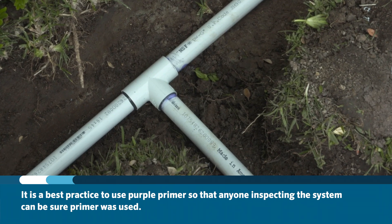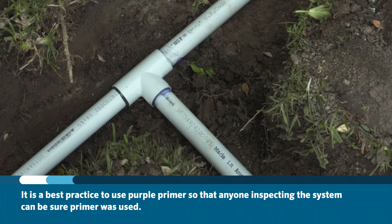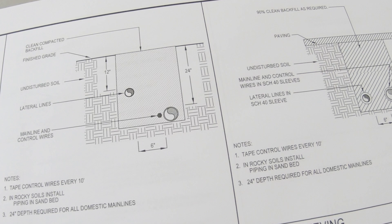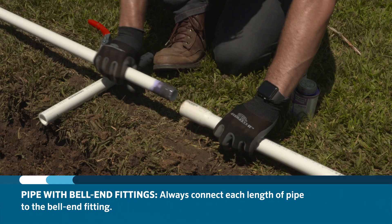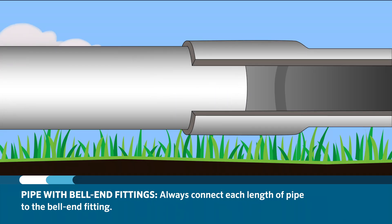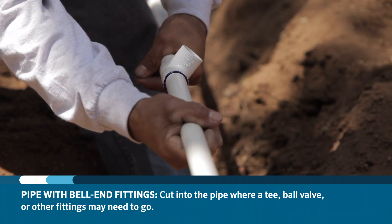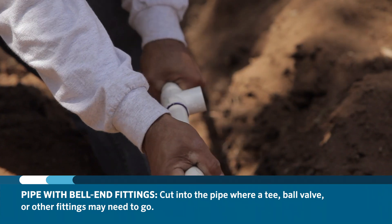The inspector will expect to see the type of pipe you used to make sure that it matches the specifications and detailed drawings on the plans. If you are installing pipe that has bell-end fittings, you should always connect each length of pipe using the bell-end fittings and cutting into the pipe where a tee, ball valve, or other fitting may need to go.